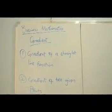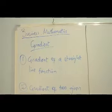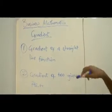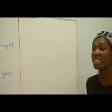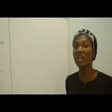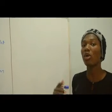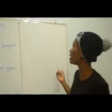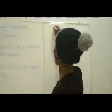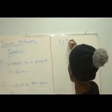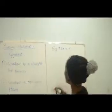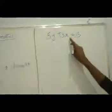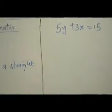Gradient measures rate of change. When we are given a straight line function, a straight line function is an equation in x and y where the highest power of x is 1. For example, 5y plus 3x equals 15 is a straight line function — the highest power of x and y is 1.